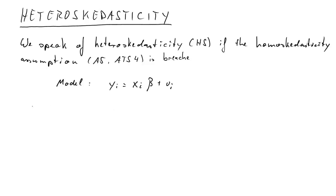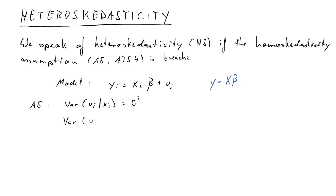Let's consider the model written down in observation-wise form. In matrix form, the homoscedasticity assumption A5 states that the variance of the u_i's conditional on the x_i's is equal to sigma squared for all observations — so it's constant. In matrix form, the variance of u conditional on x is equal to sigma squared times the identity matrix.